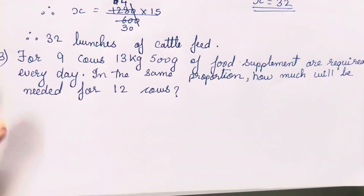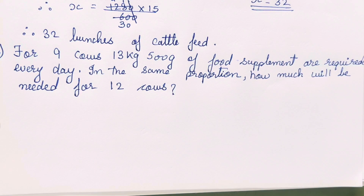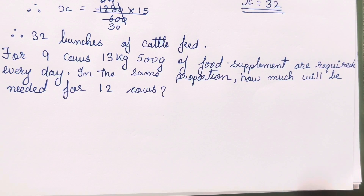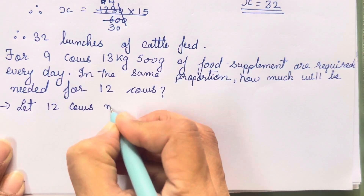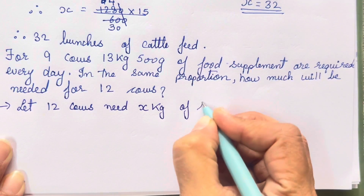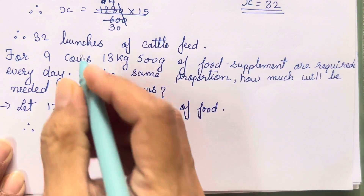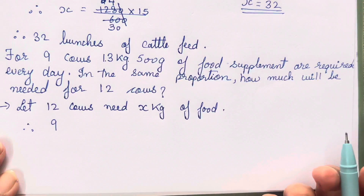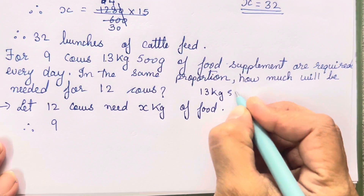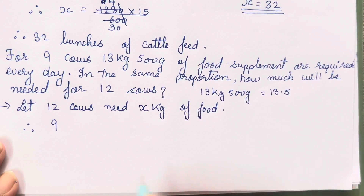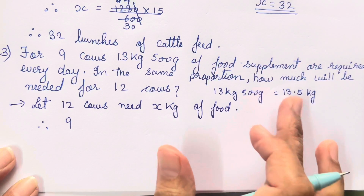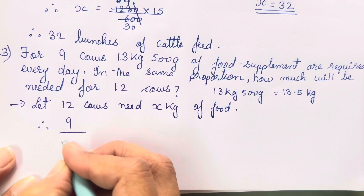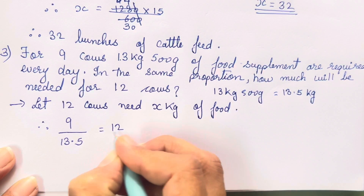Now let's move on to the third question which says: for 9 cows, 13 kgs 500 grams of food supplement are required every day. In the same proportion, how much will be needed for 12 cows? So over here we have to suppose whatever we have to find — 12 cows need x kg of food. 13 kgs 500 grams is 13.5 kgs.